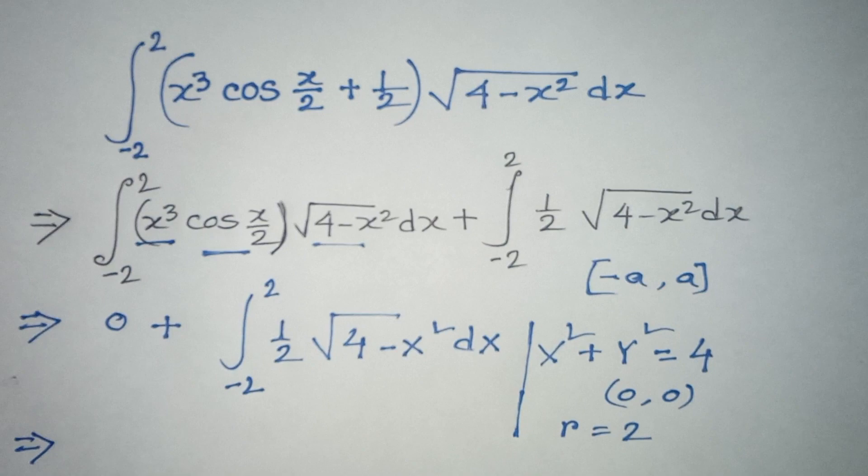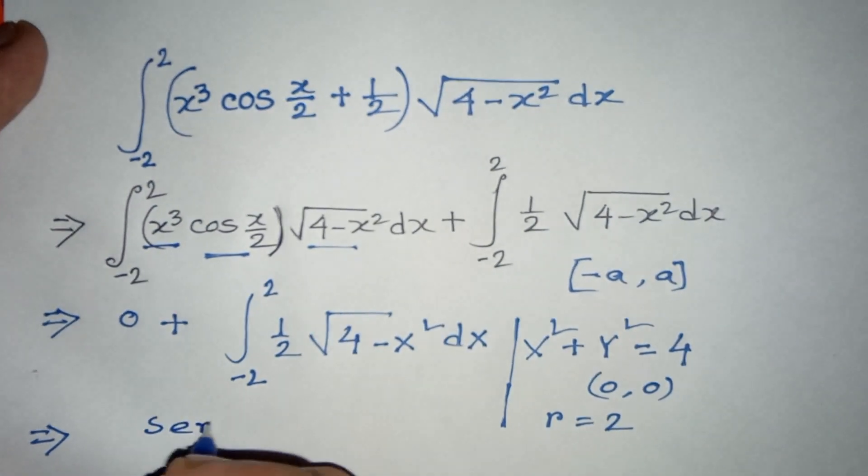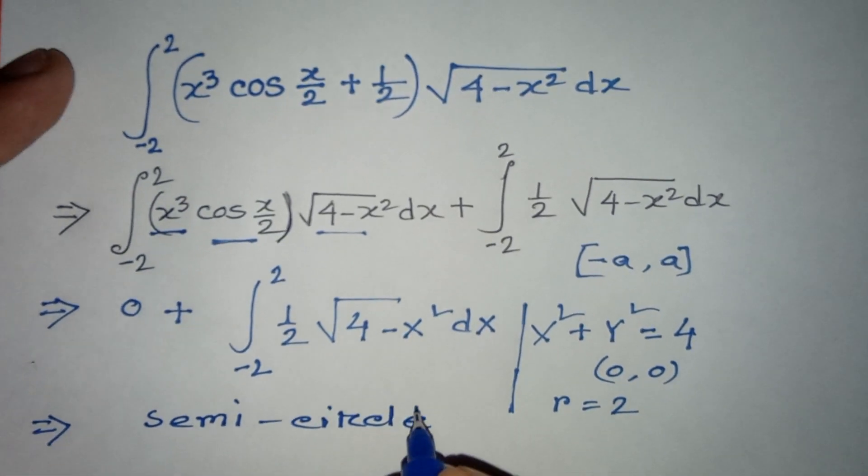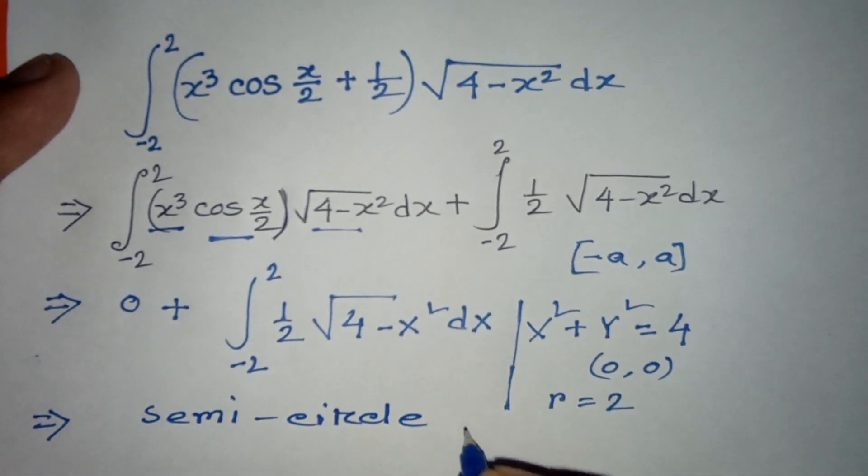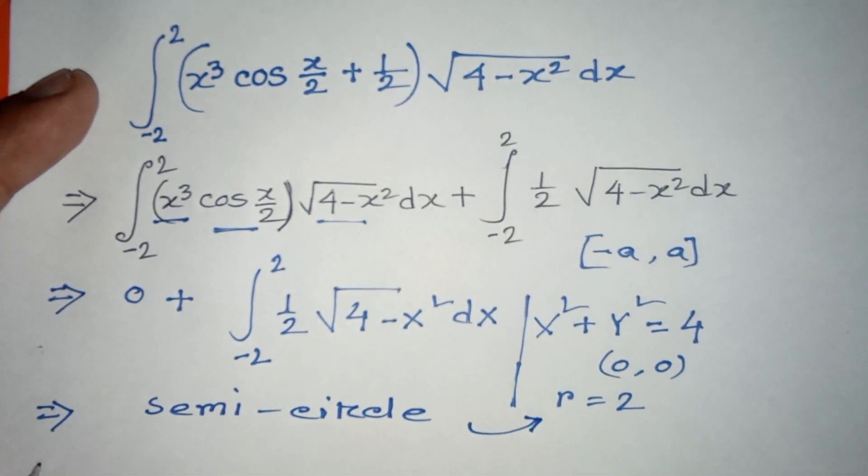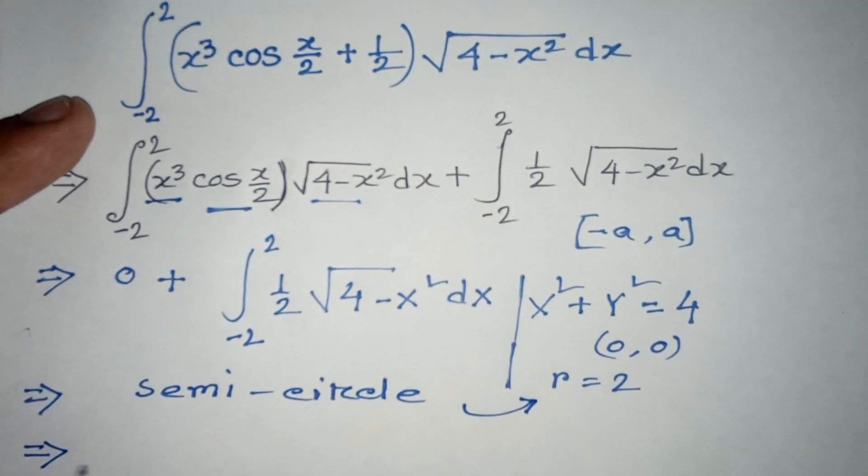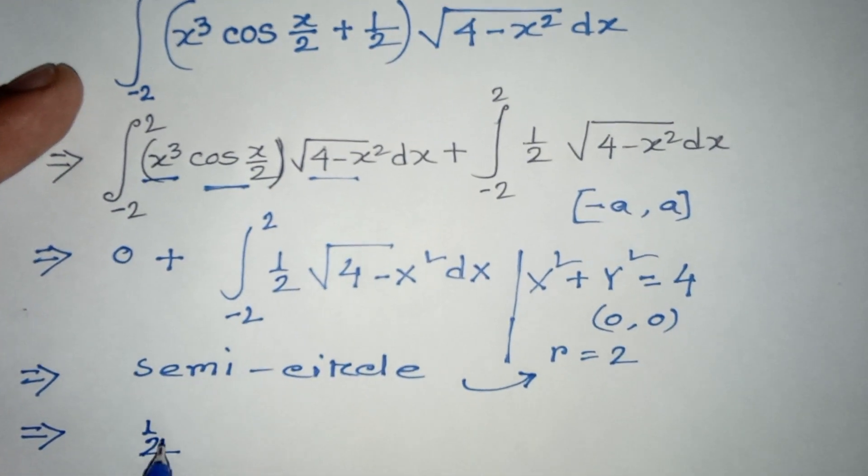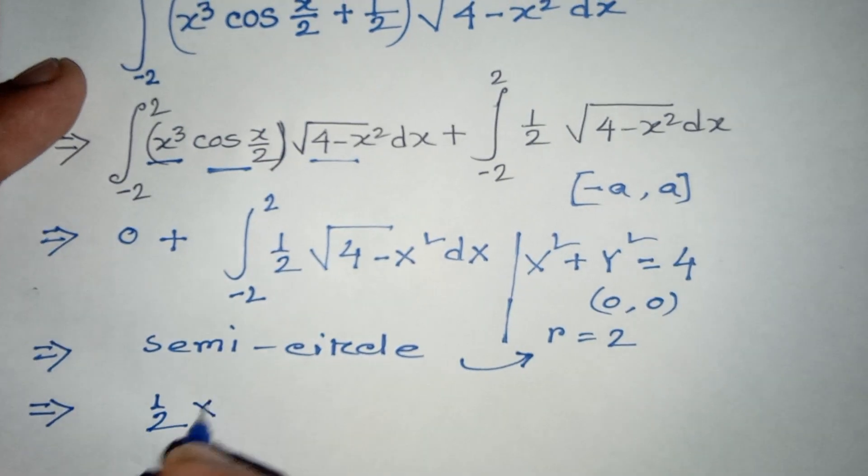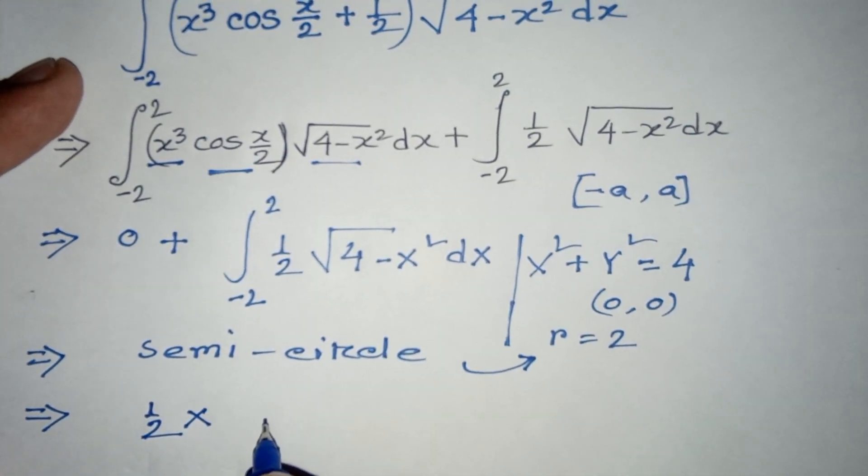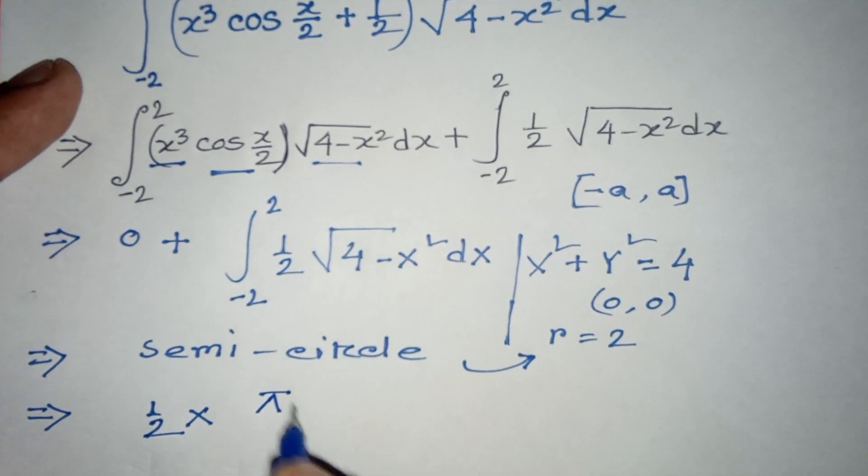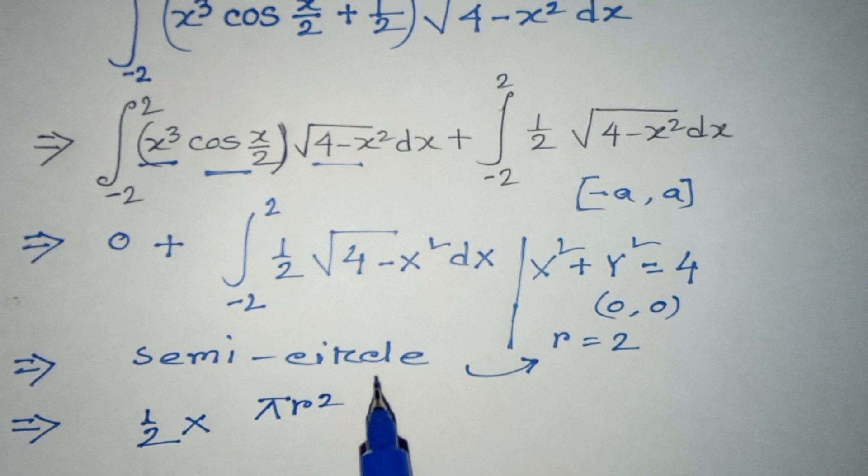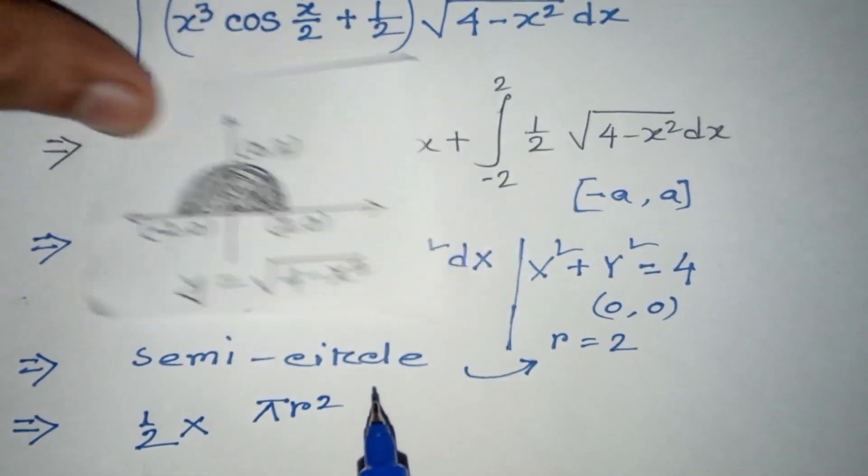A semicircle with radius r = 2. So here 1/2 into... we know the area of a circle is πr². As here we say it's a semicircle, so divided by 2.